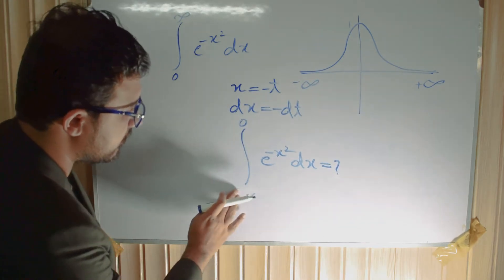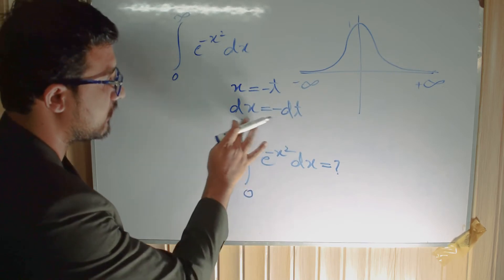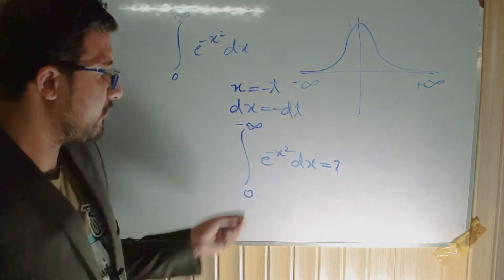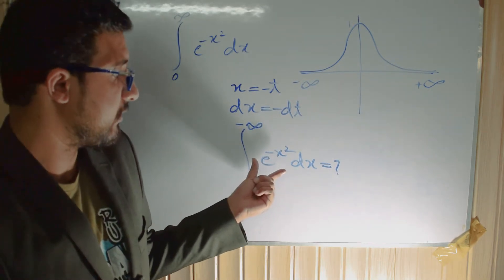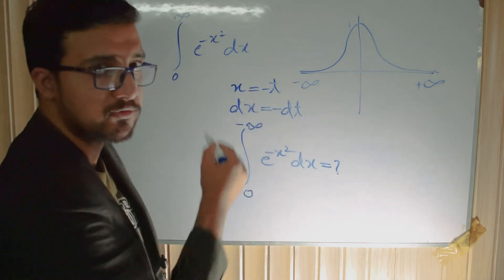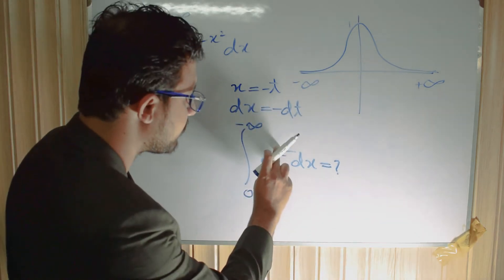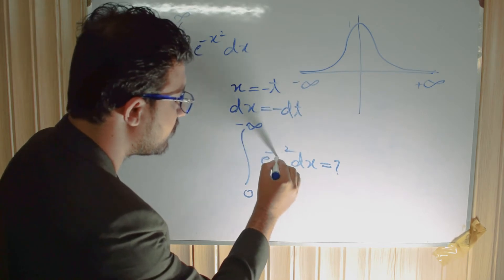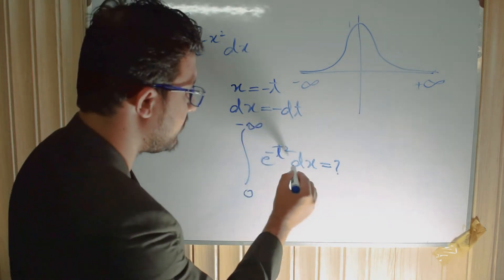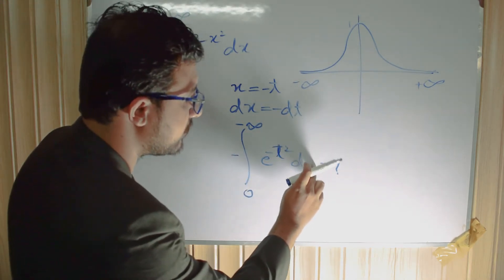So what we get is the integral from 0 to minus infinity, where x squared becomes t squared and dx becomes minus dt, so the minus sign comes in front of the integral.